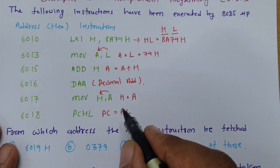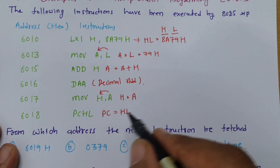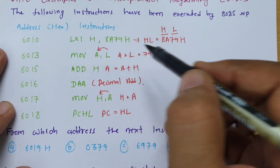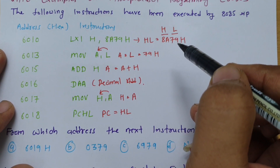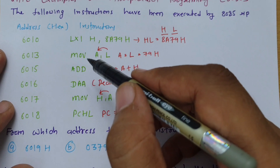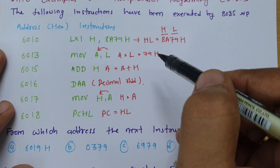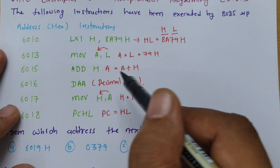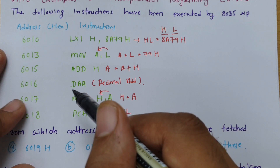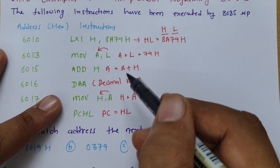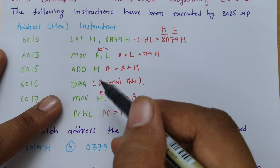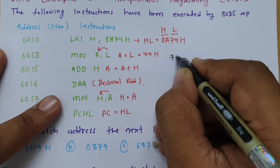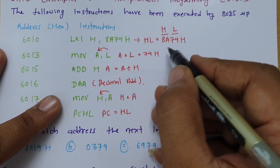Let us solve this step by step. LXIH comma 8A79, so HL equals 8A79, where L is 79. We move L into A, so A equals 79. Now we do addition: A equals A plus H, and we will be adjusting that into decimal. We need to do this addition bit by bit. So A is 79 and H is 8A.